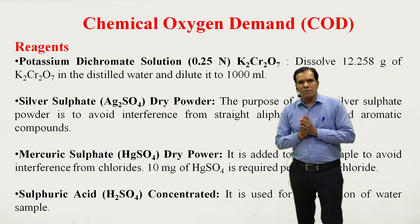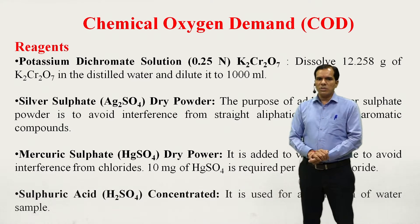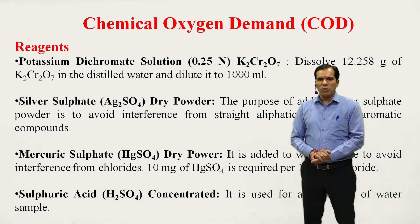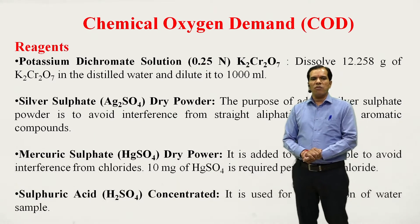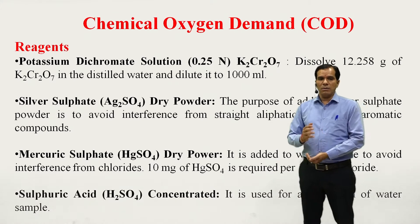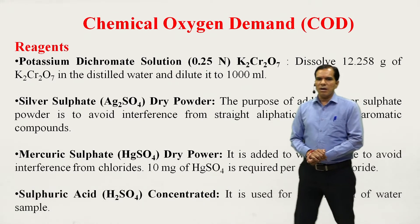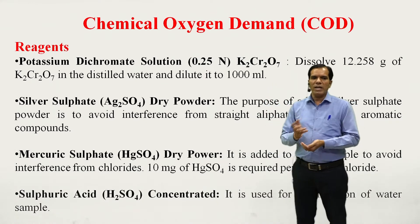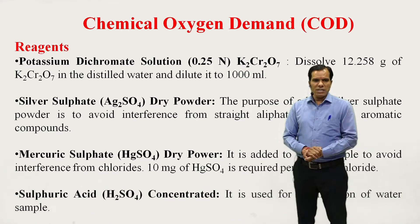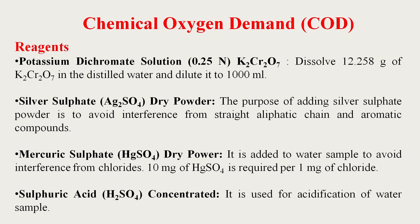The reagents required include: 0.25 N potassium dichromate solution, prepared by dissolving 12.258 grams of potassium dichromate in 1000 ml of water. Silver sulfate is used as a dry powder to avoid interference from straight chain aliphatic and aromatic compounds. Mercuric sulfate dry powder is added to avoid interference from chloride — 10 mg of mercuric sulfate is required per 1 mg of chloride.